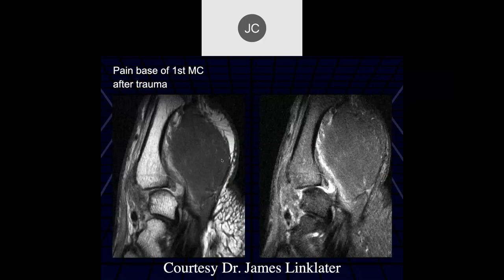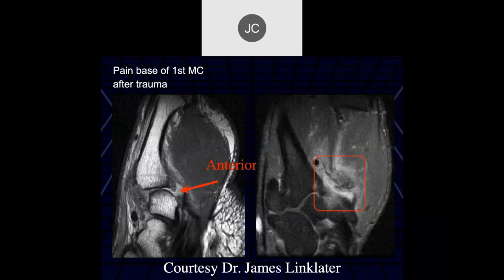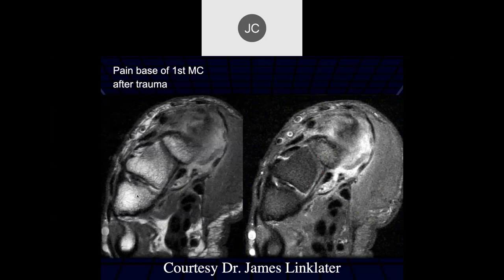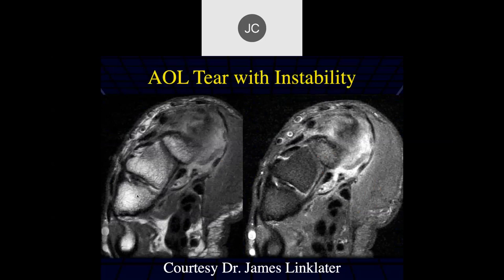Robert: pain at the first metacarpal base after trauma. There's a lot of edema surrounding the first CMC, and there looks like there's a tear of the anterior oblique ligament. That posterior ligament doesn't look great either. This was a severe injury with a complete tear of the anterior oblique ligament — probably someone who had an acute dislocation.